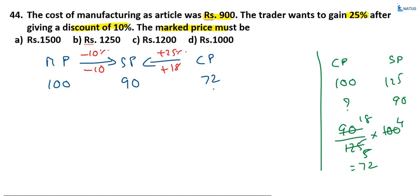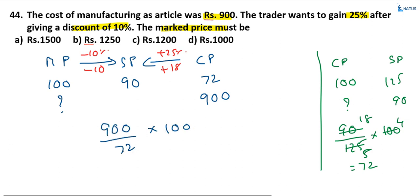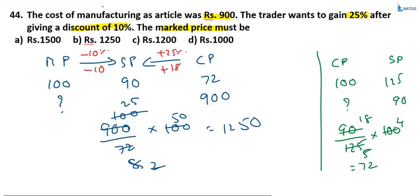If cost price equals 72 and the person marks goods at 100 and gives 10% discount, he makes 25% profit. But according to the question, the cost of manufacturing is 900. So the market price equals 900 by 72 into 100, which simplifies to 1250. Option B is the correct answer.